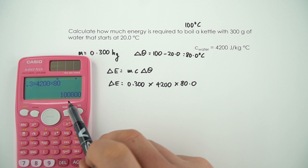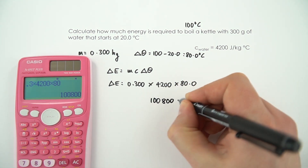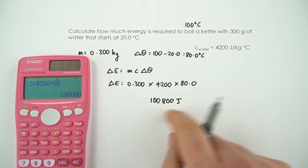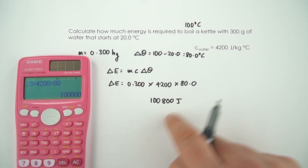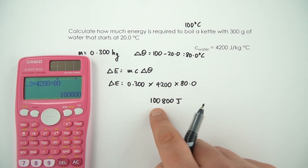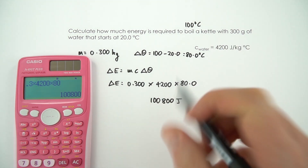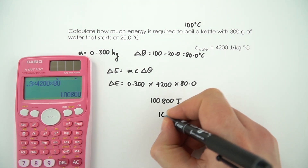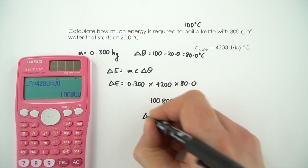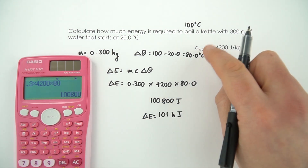We can either leave this as joules, but sometimes when you have big numbers it's useful to use a prefix. So we could give this in kilojoules, and also convert to three significant figures to match our raw data. So we can write this as 101 kilojoules — that's probably a more appropriate way to give our answer for the amount of energy needed to boil this kettle.